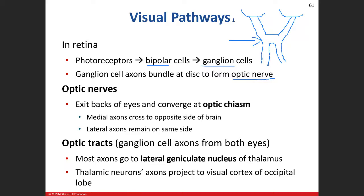At the optic chiasm, axons from the lateral portion of the eye stay ipsilateral, while the medial axons actually cross over. So you get some axons that stay on the same side and some that cross over. After the optic chiasm, this portion is called the optic tract.